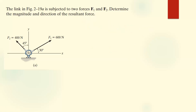First, we find the X component and the Y component of F1, and also the X and Y components of F2. I'm going to use scalar notation. The X component of F1 — since the angle is at the base, the X component is adjacent to this angle. So we're going to use cosine. This will be 600 cos 30.